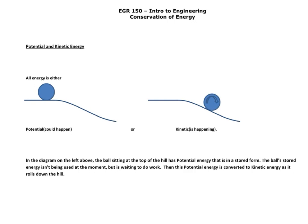On the left hand side, we see a ball that is sitting at the top of a hill. The energy in that ball is stored. It's not being used at the moment. It's waiting to do work. That is potential energy. It could happen. On the right side of the diagram, we see the ball has been pushed off the top of the hill and is now rolling down the hill. That energy is kinetic. It's happening. The energy is doing work as it rolls down the hill.